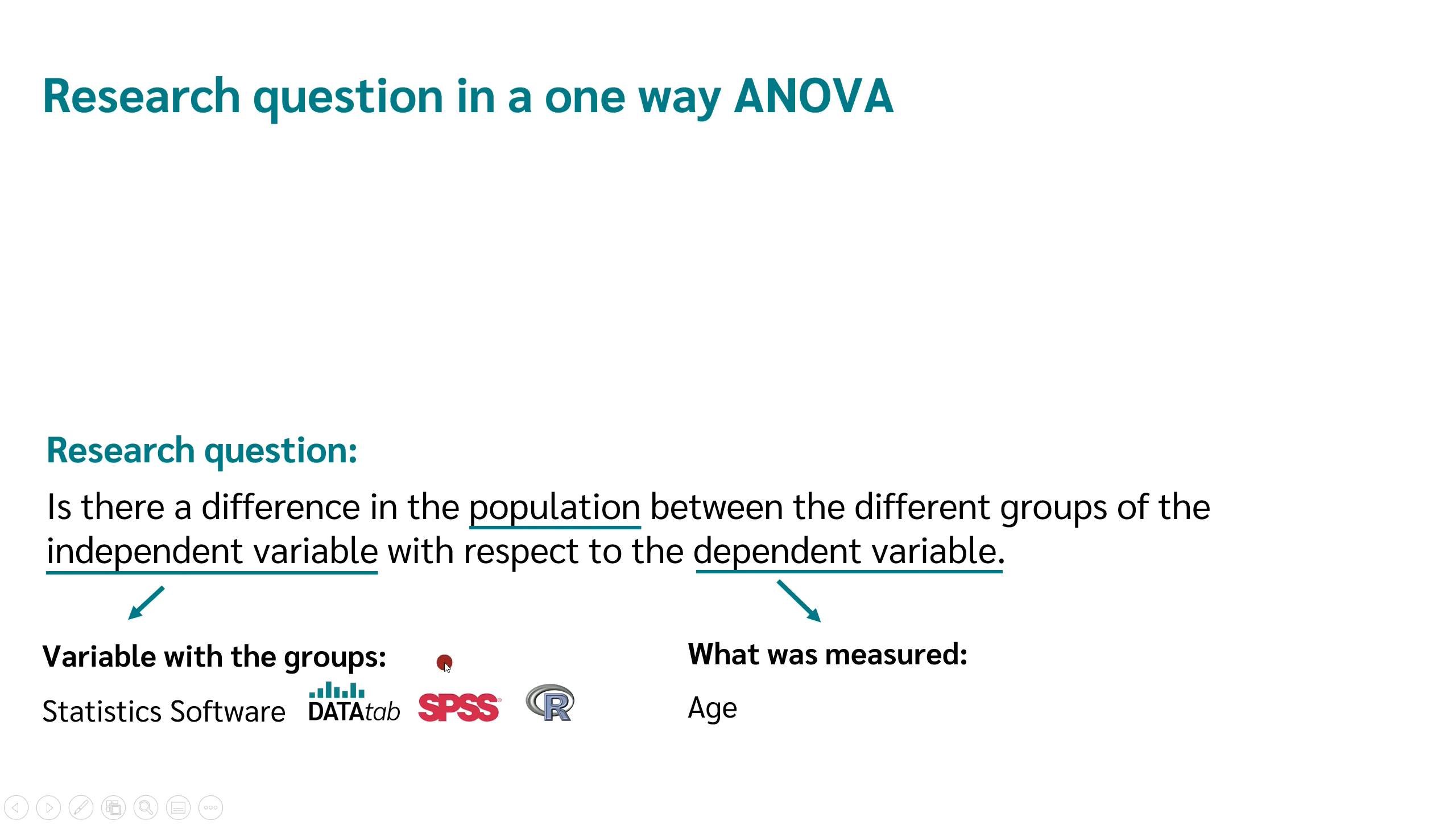Of course, the analysis of variance does not give us any information about the direction of the causal relationship. But why is our research question about the population? Don't we just have a sample? Actually, we want to make a statement about the population. Unfortunately, in most cases, it is not possible to survey the whole population and we can only draw a sample. The aim is to make a statement about the population based on our sample with the help of the analysis of variance. For our example, the question would be, is there a difference between the users of different statistical software solutions in terms of age?